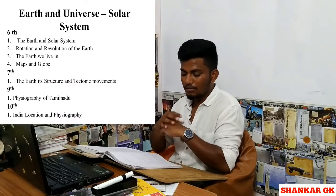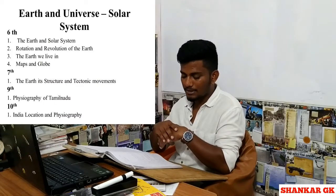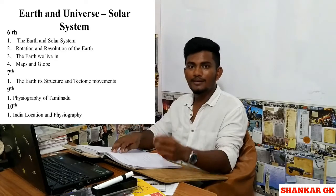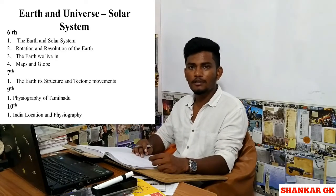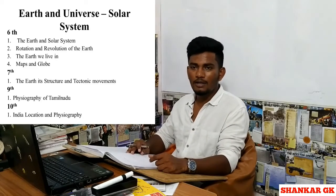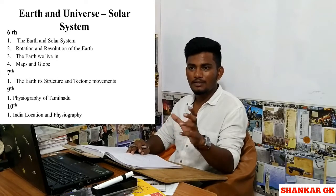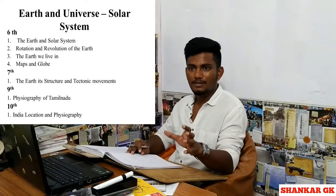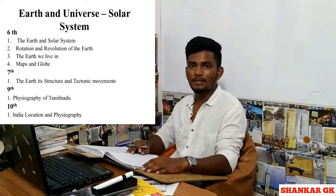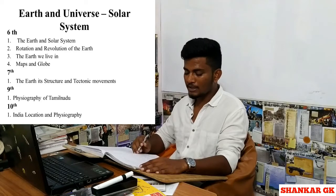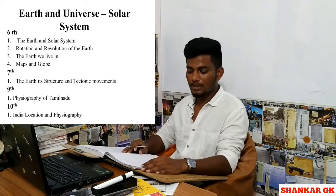The first topic is Earth and the Solar System. In the sixth book, I will read out the topic — it will be displayed. In the second part I will cover that chapter. So in the sixth book, the topics are Earth and the Solar System.